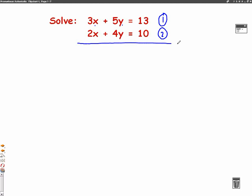So our job is to change one of the letters. We're going to choose x first. We're going to change both of the equations, 1 and 2, so that there's the same amount of x's. Now the way we do this is quite simple. We take the first one and we times it by what's in front of the second one, which in this case is a 2.